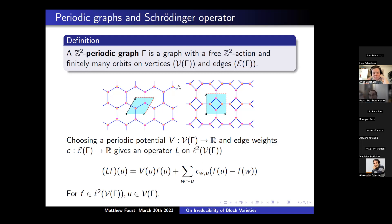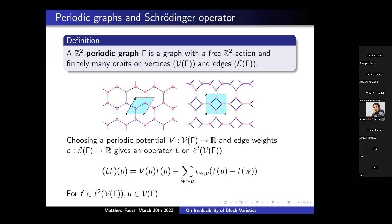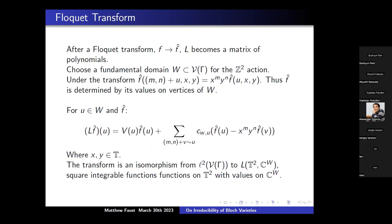If C is one on every edge, that would just be the standard graph Laplacian. This operator acts on all functions with domain on vertices of Γ, but we're going to focus on square summable functions on the vertices of Γ. This operator is going to be indexed by all possible values that F could take at every different vertex, so we have this infinite dimensional thing. We can't really do much with that, but we have this periodicity with respect to the group, so we're going to take a Fourier transform with respect to the underlying group that our graph is periodic to.